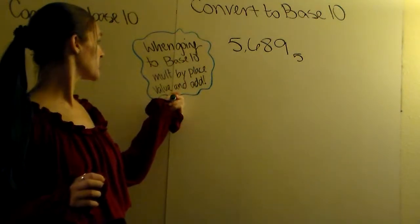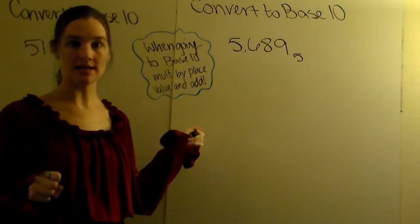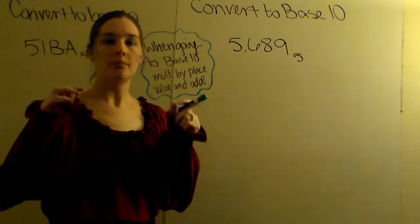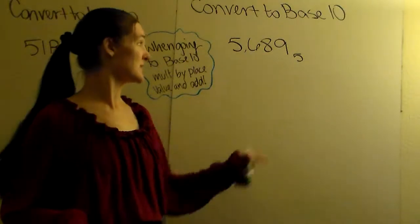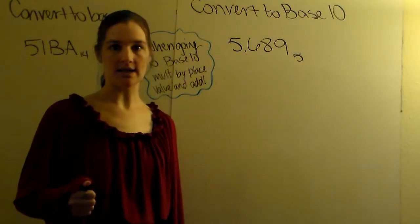So when you're converting to base 10, you want to multiply by the place value and then add everything together. So you're going to keep all the original numbers, multiply each one by the respective place value in the different base, and then add all of your products together.